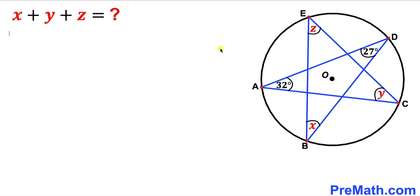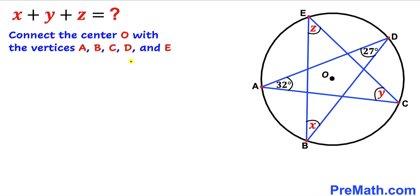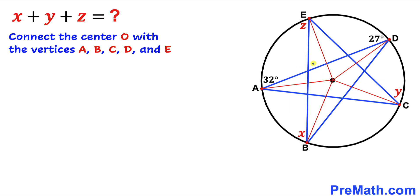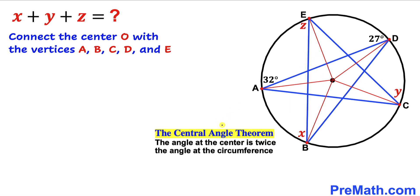Let's get started. Our very first step is to connect the center O with all five vertices A, B, C, D, and E, as you can see in the next diagram. Now let's recall the Central Angle Theorem: the angle at the center is twice the angle at the circumference.